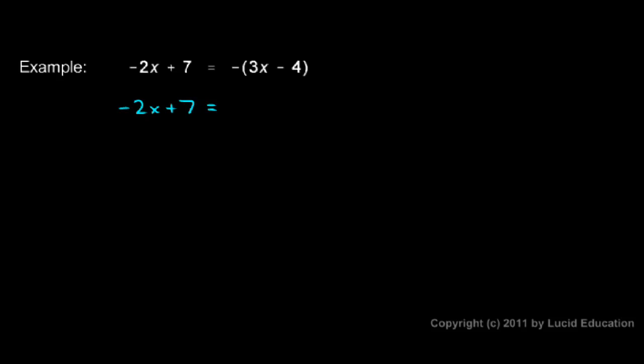On the right side this negative sign gets applied to the 3x making it a negative 3x. And the negative sign also gets stuck onto the negative 4. This is like saying a negative 1 out here multiplied by the negative 4. A negative 1 times a negative 4 is a positive 4.